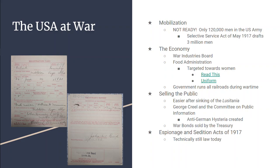The government is also going to run all of the railroads during wartime. So we've got the army being built, the economy going towards war, but now we have to sell the people. It's not that hard to sell the public after the sinking of the Lusitania, but there are still some holdouts. President Wilson creates the Committee on Public Information and appoints George Creel to lead it.